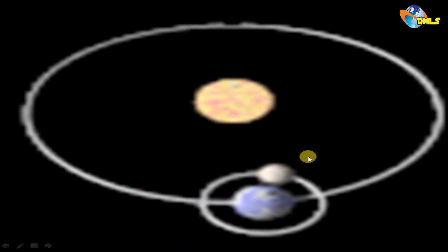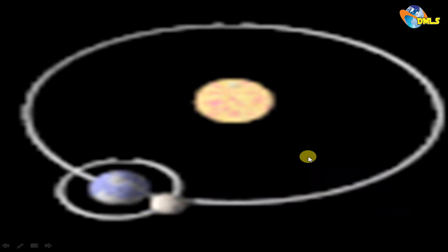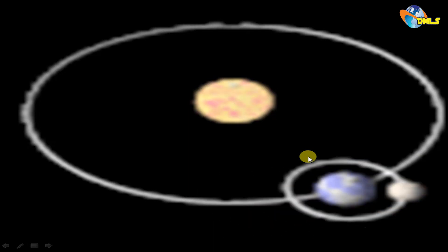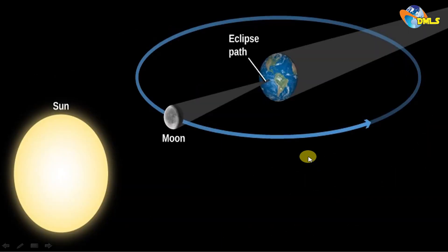You have two rotations: rotation of the Earth around the sun, and rotation of the moon around the Earth. During the rotation, if the three bodies are in a straight line — like in this picture, where the sun, the moon, and the Earth are in a straight line — a shadow can be formed. Now observe this picture and tell me what you observe.